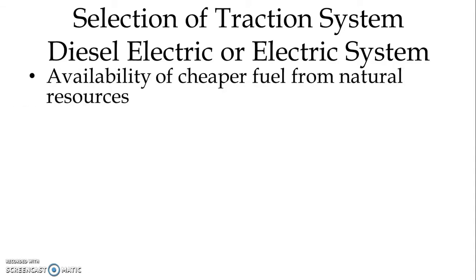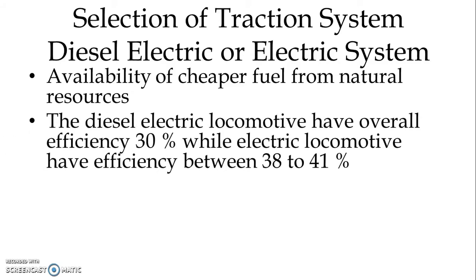First of all we will have to see the availability of cheaper fuel from natural resources, for example like coal, diesel, or gas. The diesel electric locomotive has an overall efficiency of 30 percent, while the electric locomotive has efficiency between 38 to 41 percent. So for higher efficiency we will have to go for the electric locomotive system.